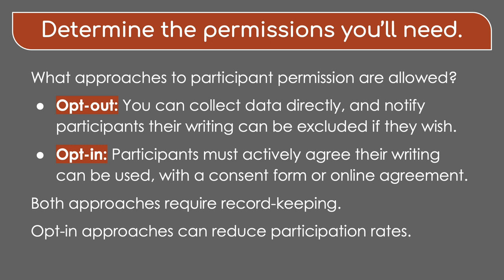First, if you're gathering existing data, such as student work from classes, check to see if your institution allows an opt-out or requires an opt-in policy for gathering this type of data. Opt-out means that you can collect data from the source, such as from course management systems, without a signed consent form. You do still need to contact the participants to let them know you are gathering their data and offer them the option to opt-out and keep their data out of your corpus. Opt-in, on the other hand, means that you will need to have a signed consent form or online agreement in order to collect the data. Generally speaking, opt-in approaches are more labor-intensive and can reduce participation rates, so plan accordingly.